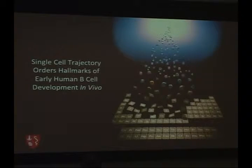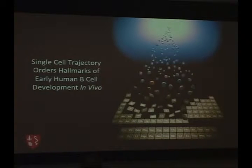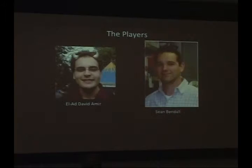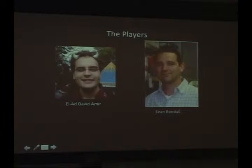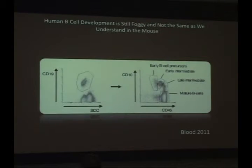The first part of this talk is about how we've been able to extract a single-cell trajectory that can order hallmarks of early human B-cell development. This is work done with Elad, David Amir, who's in Donna's lab at Columbia, and Sean, who you all met yesterday.